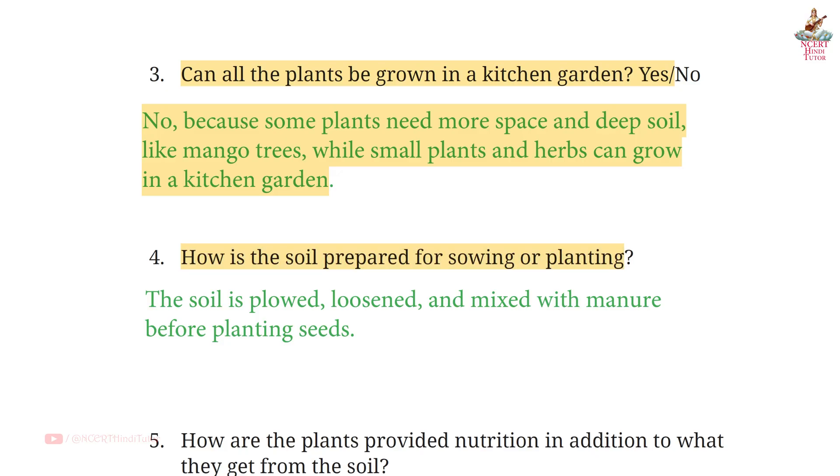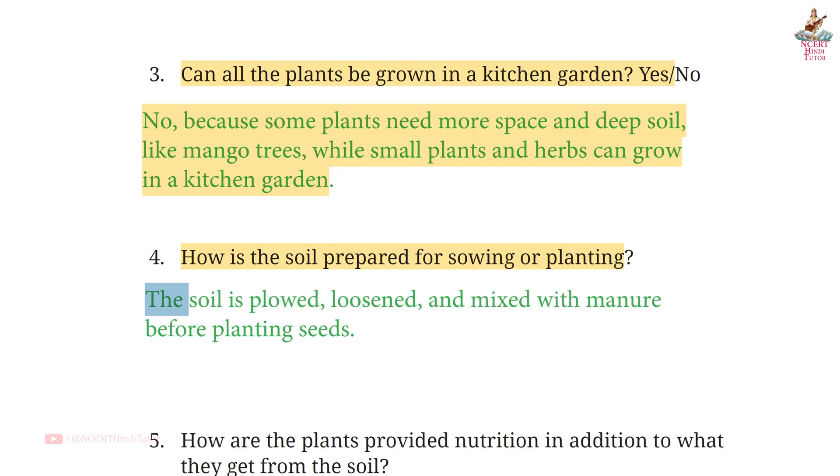Question 4: How is the soil prepared for sowing or planting? Answer: The soil is plowed, loosened, and mixed with manure before planting seeds.